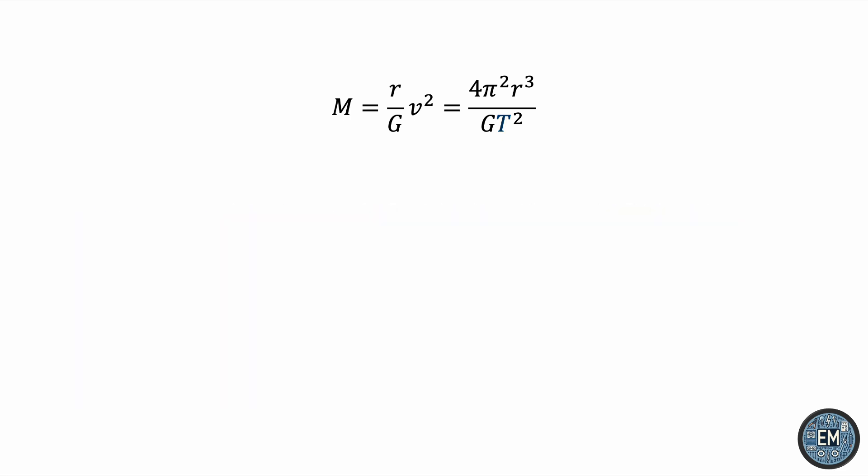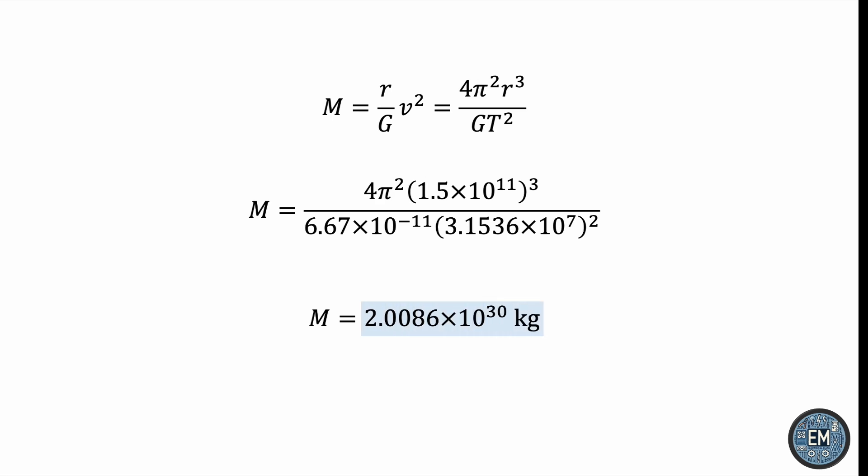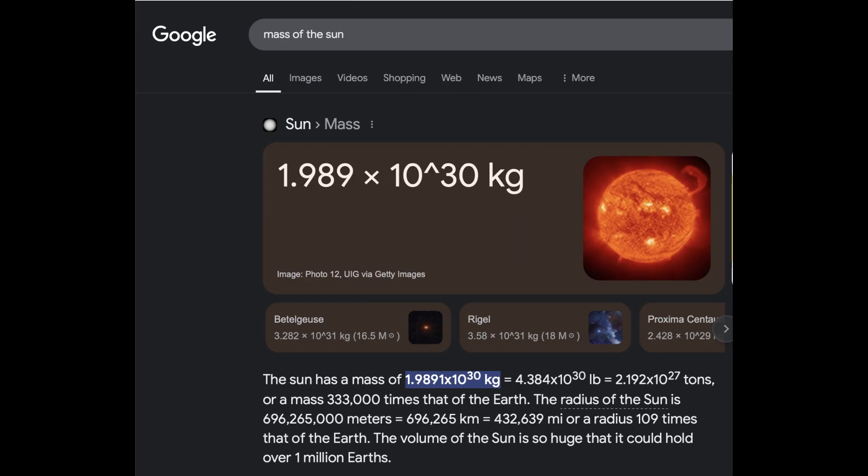We are now ready to use this formula. Substituting the values, we get a mass of around 2.0086×10³⁰ kilograms. Checking the widely accepted value for the mass of the Sun, we can see that we are a little bit off, but why is that the case? Why is there this discrepancy?